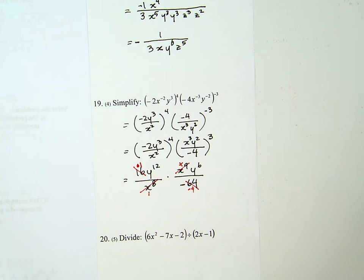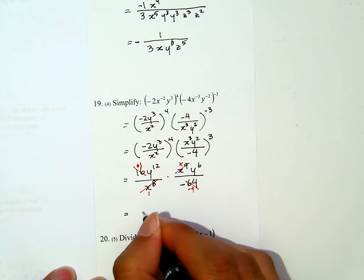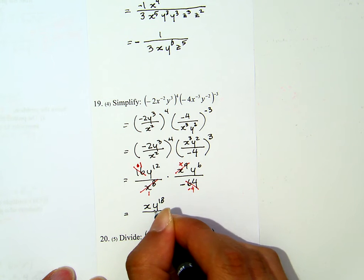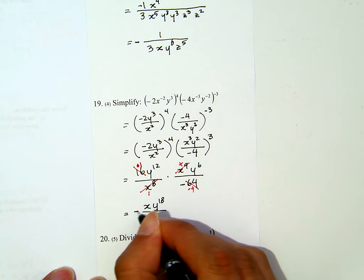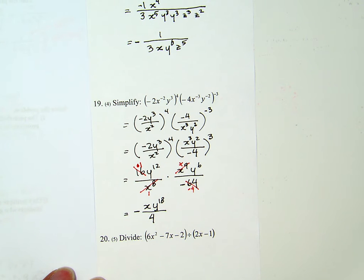The y's, because both of them are on the numerator, they don't cancel. In the end, then, I will have, on the top, I have x times y to the 18th, and at the bottom, I have negative 4. Let me put the negative next to the fraction, and 4 down here.